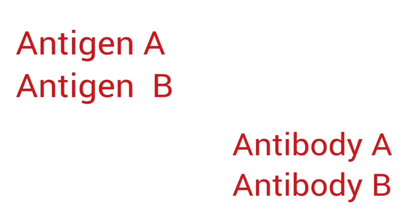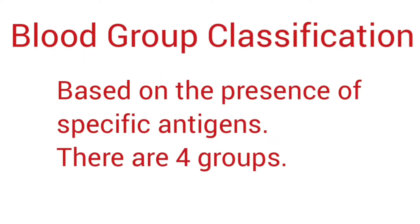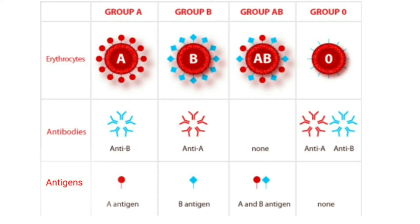There are two types of antigens — antigen A and antigen B — and two types of antibodies — antibody A and antibody B. Based on the presence or absence of specific antigens, human blood is classified into four groups. Blood group A has antigen A and antibody B. Blood group B has antigen B and antibody A. Blood group AB has both antigen A and antigen B but no antibodies. Blood group O has neither antigen A nor B, but has both antibodies A and B.